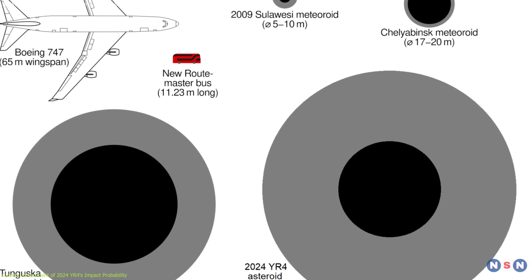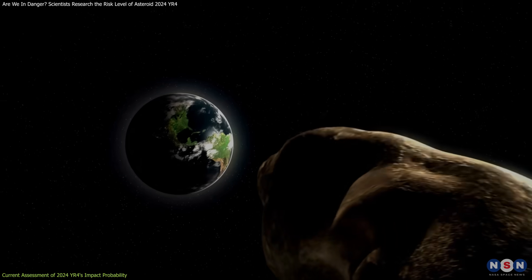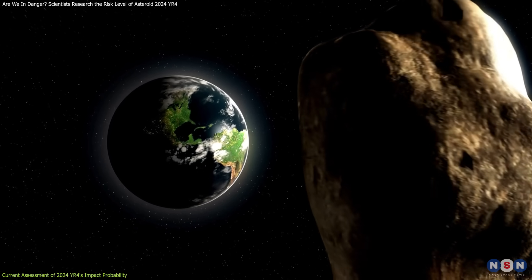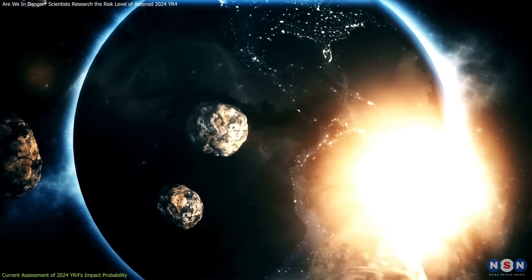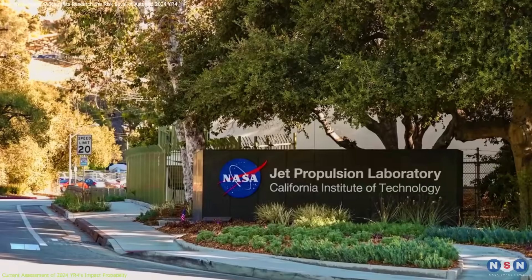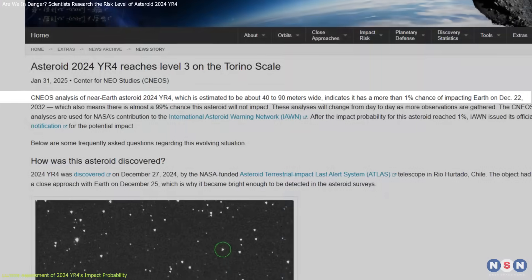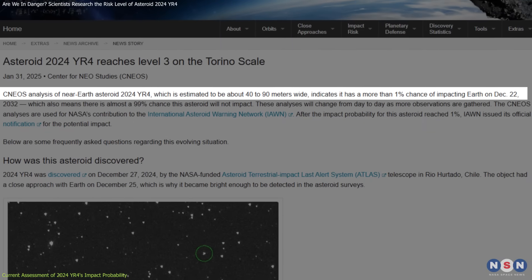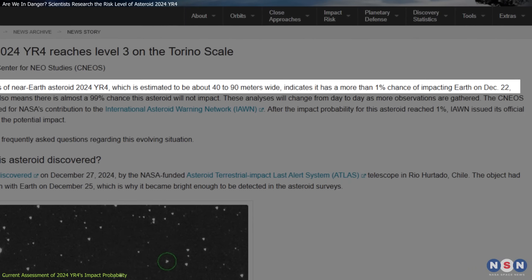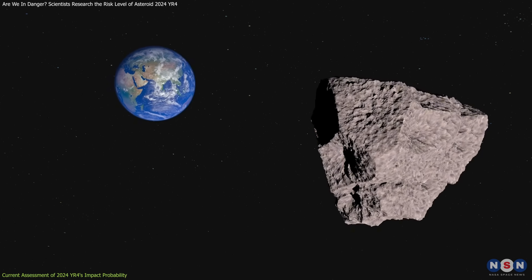This object, estimated to be between 40 and 90 meters wide, has caught the attention of experts because even a relatively small asteroid of this size could cause significant regional damage if it were to explode in Earth's atmosphere. Recent calculations by NASA's Jet Propulsion Laboratory suggest a 1.6% chance of an impact on December 22, 2032, a figure that, while low, demands thorough investigation.